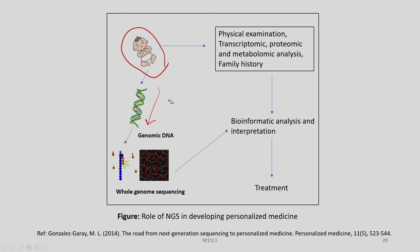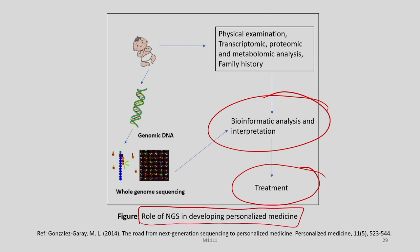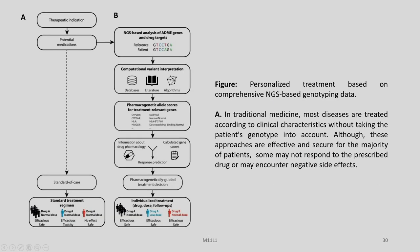Along with records of physical examination, transcriptomic, genomic, proteomic, and metabolomic analysis, bioinformatic analysis and interpretation are done to arrive at the correct diagnosis with the help of genetic information, and based on that, the treatment is decided for the particular individual. This is the role of NGS in developing personalized medicine, as visualized from this diagram.